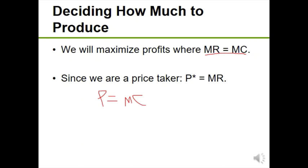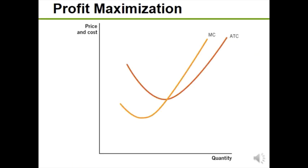To see profit maximization graphically, let's look at our firm's cost curves — marginal cost and average total cost — remembering that average follows the margin. Marginal cost starts decreasing due to gains in production, then hits diminishing marginal returns and starts increasing. When marginal cost is below average total cost, ATC is decreasing; when above, ATC is rising. Thus marginal cost intersects average total cost at its minimum.